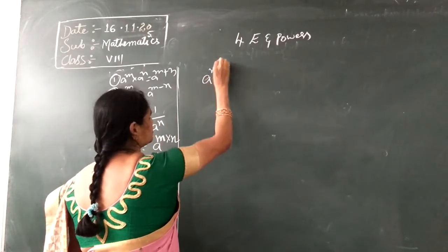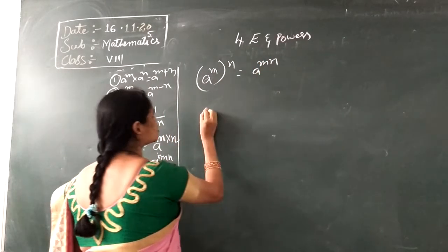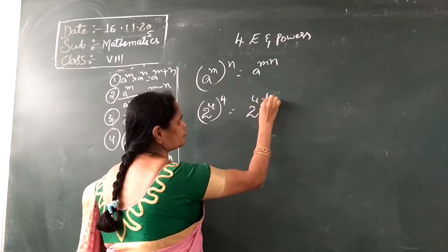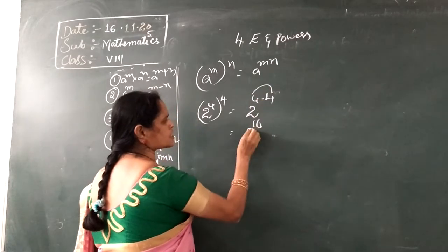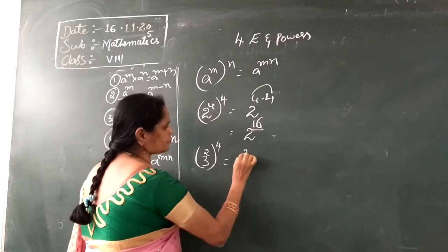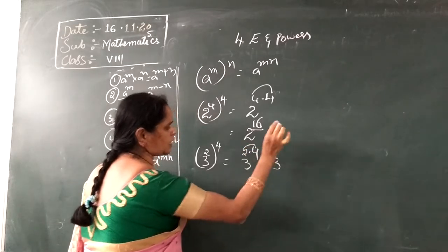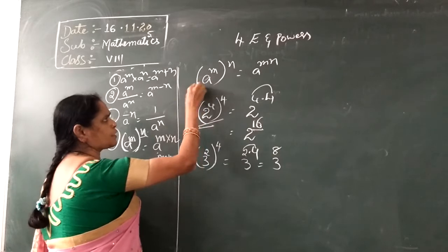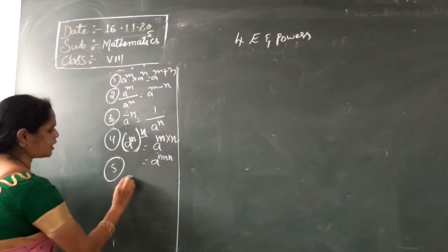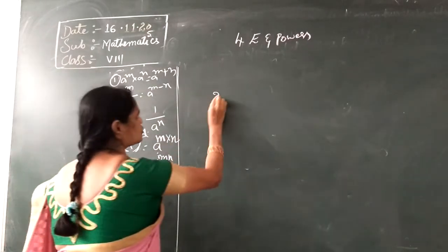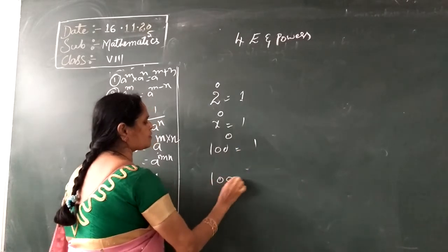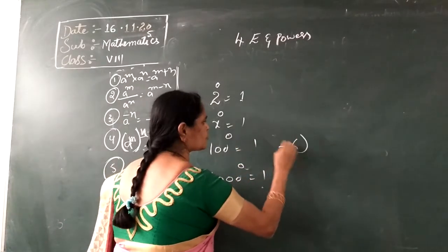For example, two to the power of four, whole to the power of four, equals two to the power of four into four, which is two to the power of sixteen. Similarly, three to the power of two, whole to the power of four, equals three to the power of two into four, that is three to the power of eight. The fifth formula is: A to the power of zero is equal to one. So two to the power of zero, X to the power of zero, one hundred to the power of zero, one thousand to the power of zero, minus six to the power of zero — all equal one.